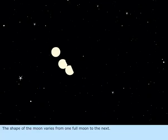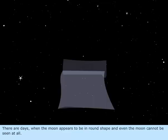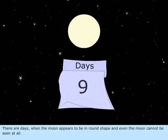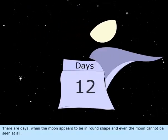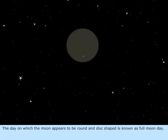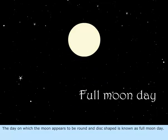The shape of the moon varies from one full moon to the next. There are days when the moon appears to be in a round shape, and even the moon cannot be seen at all. The day on which the moon appears to be round and disc-shaped is known as full moon day.